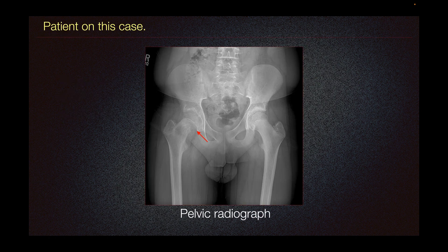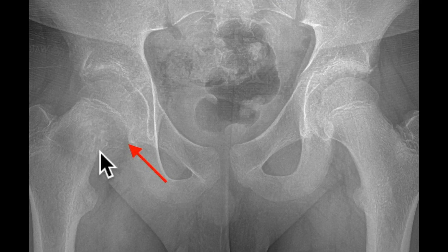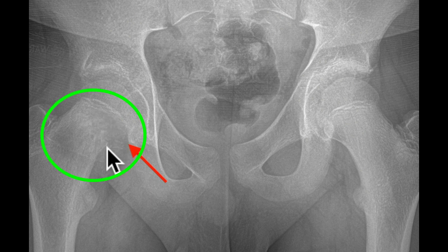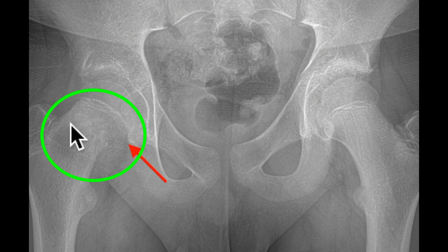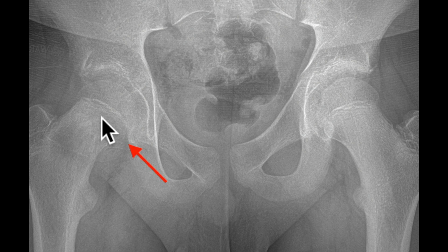The patient in this case presented with this pelvic radiograph, demonstrating an ill-defined region of lucency in the right medial femoral neck with some cortical destruction along its medial margin. There is also an associated wide zone of transition. All these findings are suspicious for an aggressive lesion.